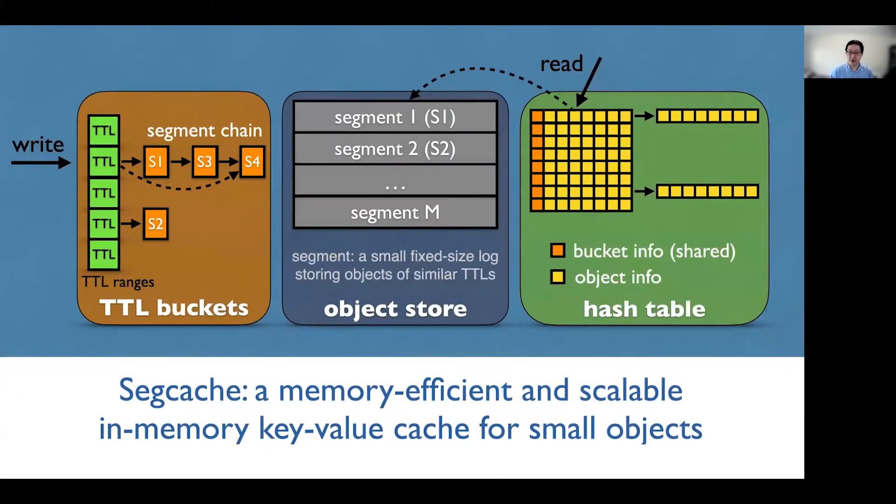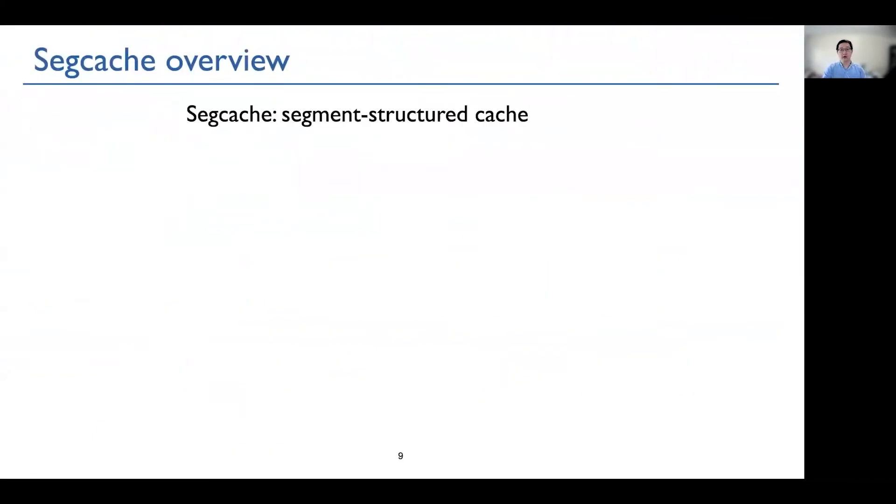Now it's time for me to present Segcache, a memory-efficient and scalable in-memory key-value cache for small objects. As high-level overview, Segcache stands for segment-structured cache. It has high memory efficiency. It can efficiently remove all the expired objects. It has tiny object metadata.